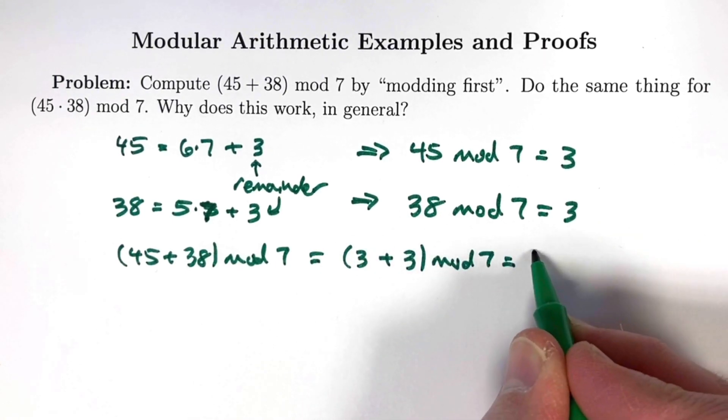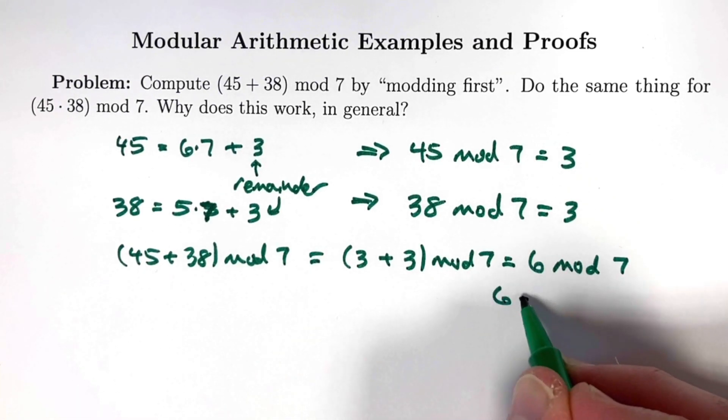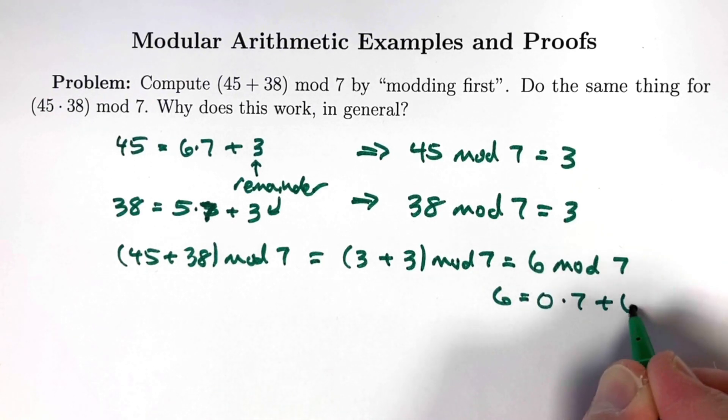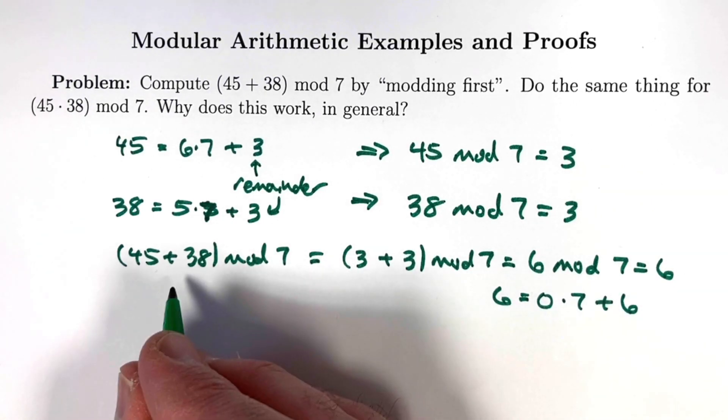But 3 plus 3 is 6. What is 6 mod 7? When I divide 6 by 7, I get a quotient of 0 and a remainder of 6. This equals 6.